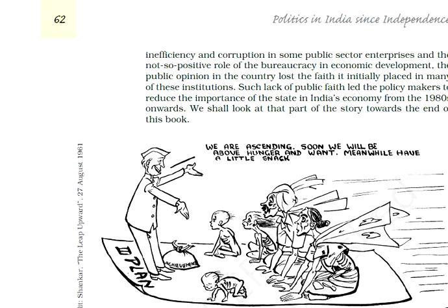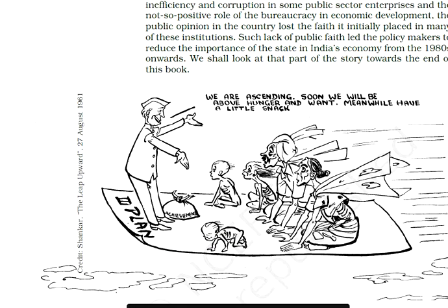Inefficiency and corruption also started in some public sector enterprises. There is a cartoon explaining the third Five-Year Plan, where achievements are shown as quite less. In the 1960s when the third Five-Year Plan was launched, people were facing famine, drought, and malnutrition. Yet leaders like Jawaharlal Nehru are shown giving the message that 'we are progressing, we are ascending — soon we will be above hunger.' Meanwhile, the common people sitting on the floor are shown as ascending and growing, but the real condition was that they faced drought and famine and were dying of hunger. The cartoon satirizes the gap between what leaders claimed and what people actually experienced in the third Five-Year Plan.